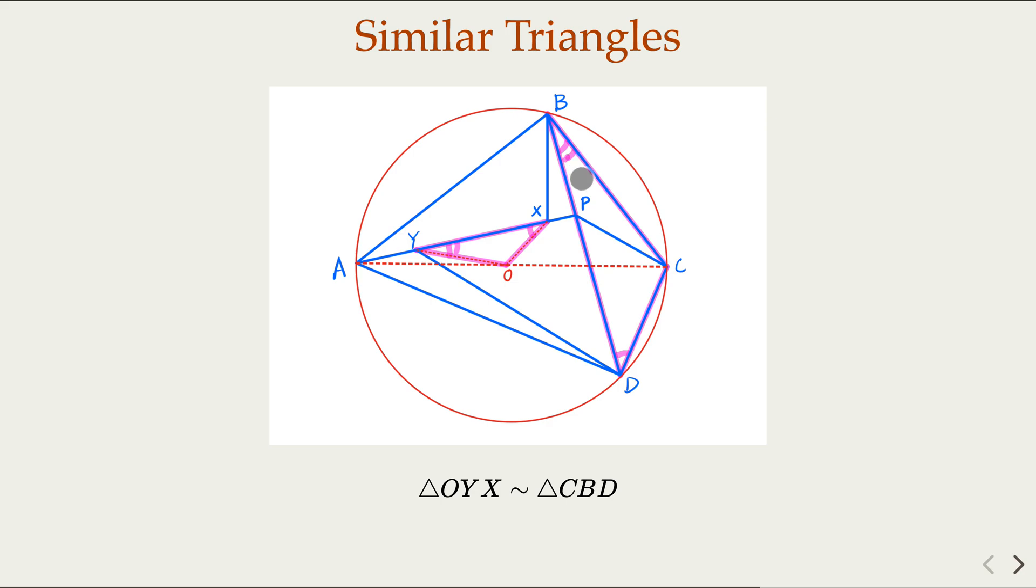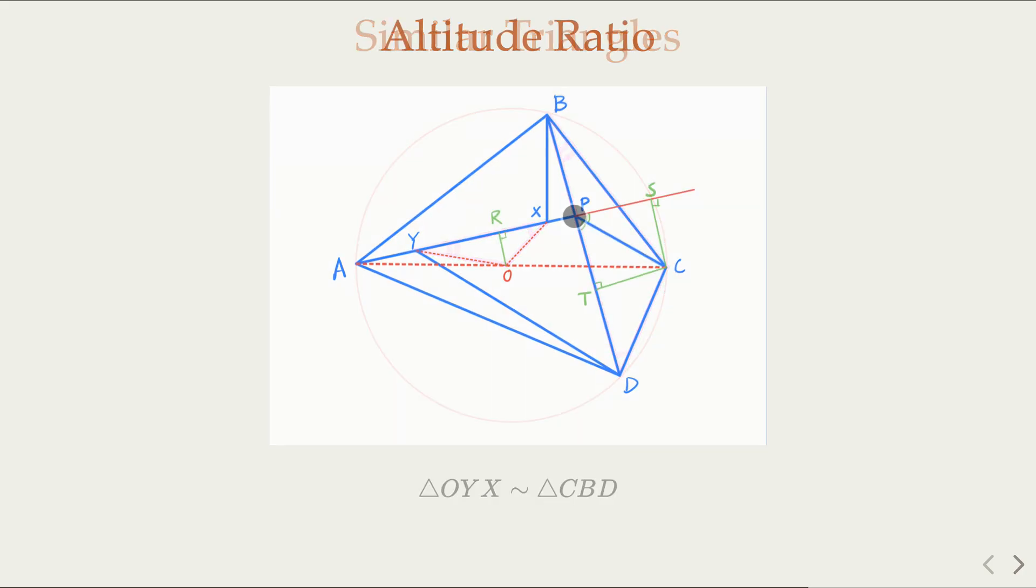Notice there's one pair of ratio we have not used yet. The smaller angle is half of the bigger angle - angle DPC is half of angle APB. Let's extend it out.